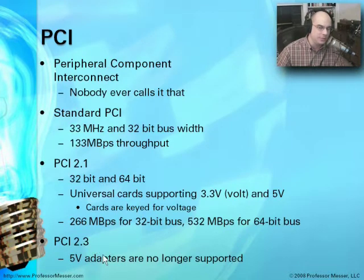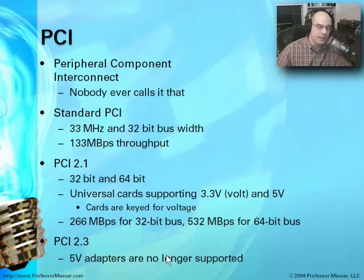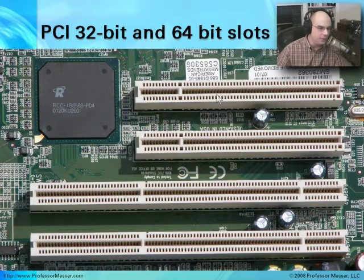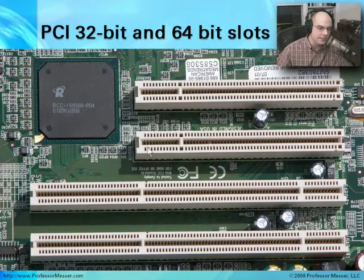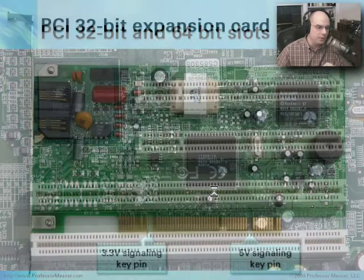Once we started getting up into these faster speeds, we found ways to do more with less. In the latest version of the PCI specification, version 2.3, the 5 volt adapter is no longer supported — everything is at 3.3 volt. If you look at your motherboard, you'll see the PCI slots. This server motherboard has both 32-bit PCI slots at the top and longer 64-bit PCI slots. You can see they're keyed a little bit differently, with plastic notches so that only a certain kind of card fits into those slots.